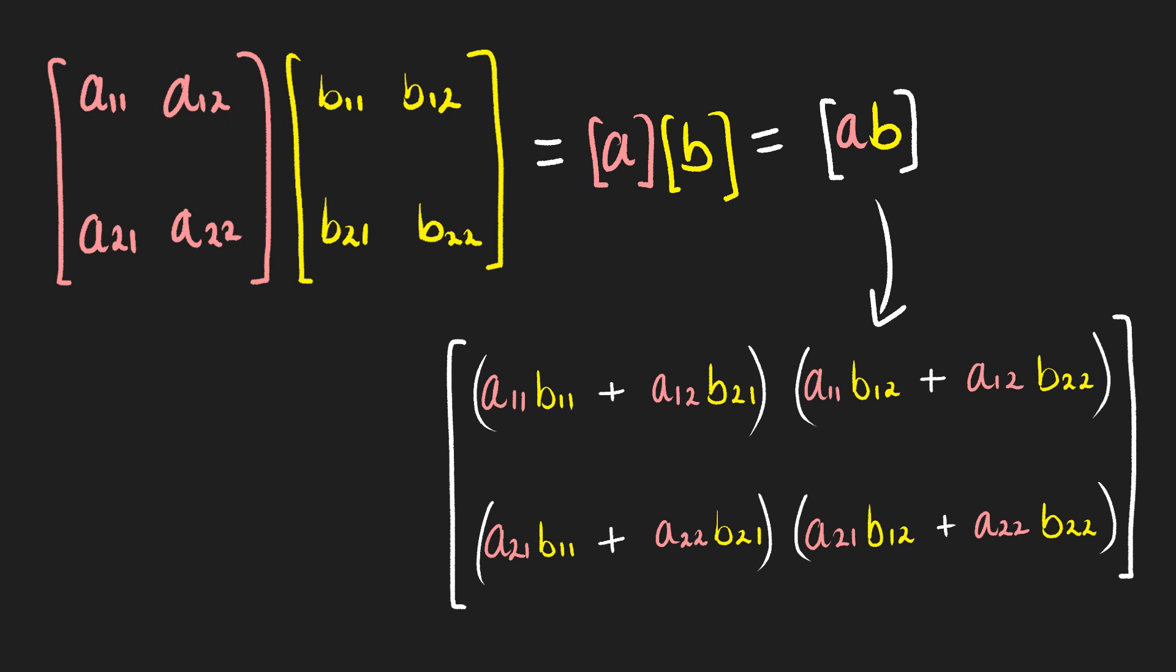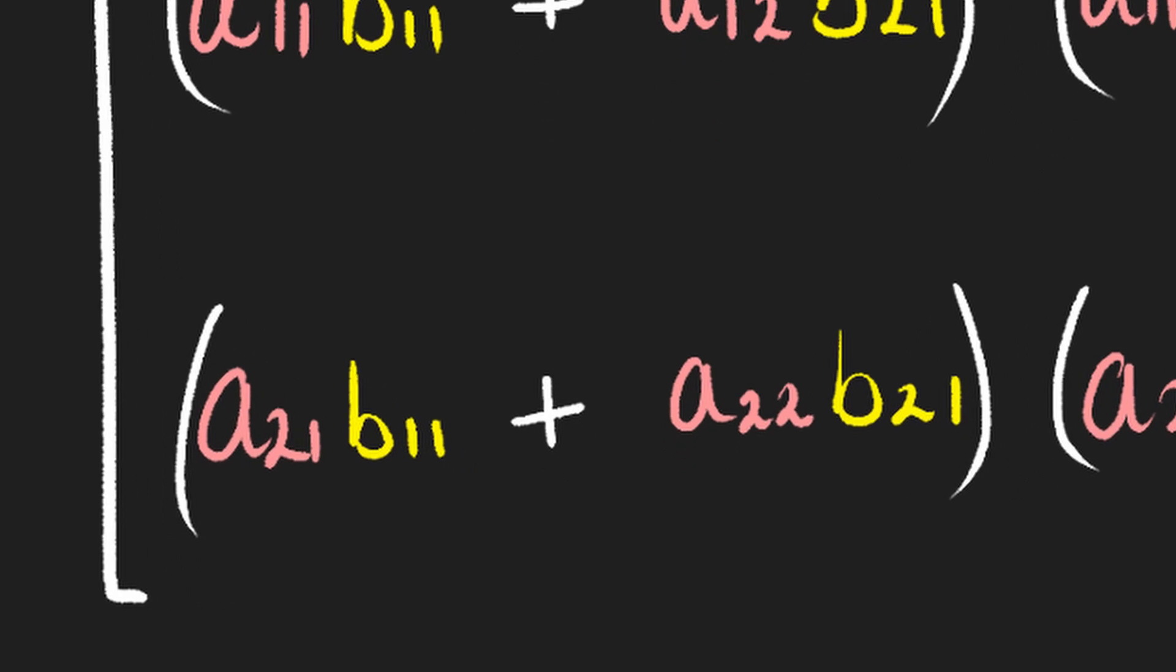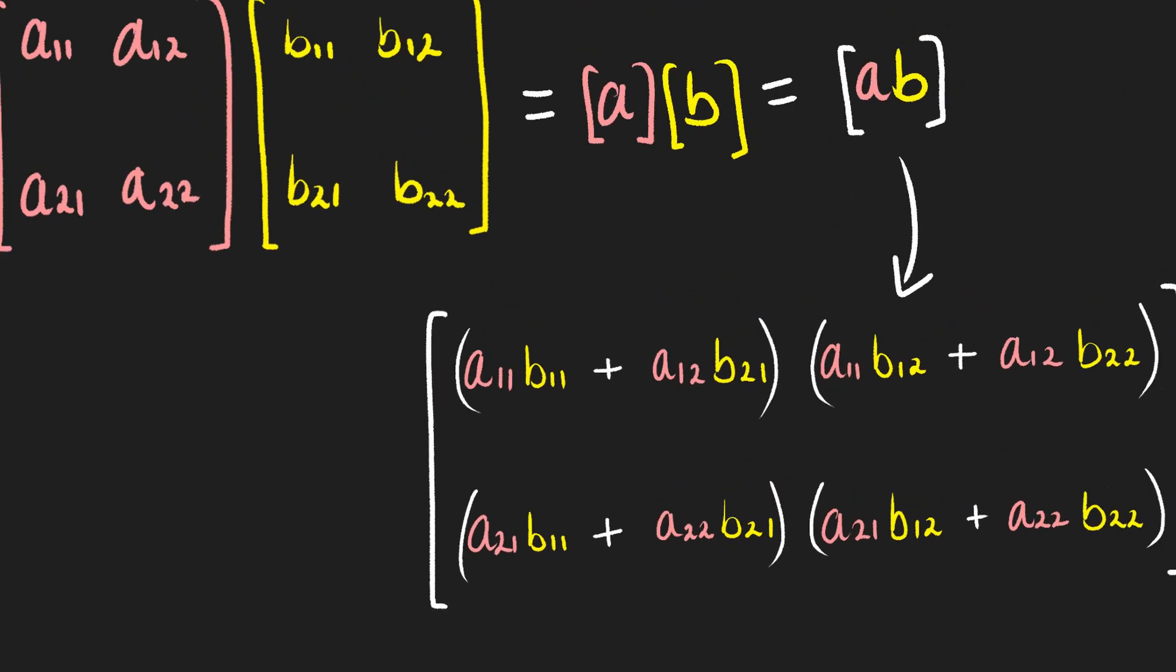Let's just talk through another one. Let's say that we're looking at the combined second row and first column. We have A21 times B11 plus A22 times B21. And that gives us our second row, first column values of our new combined transformation matrix, or what's known as a composite transformation matrix.